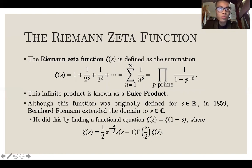Although this function was originally defined for the real numbers, Riemann, in 1859, extended it to the complex numbers. He did so by finding a functional equation.